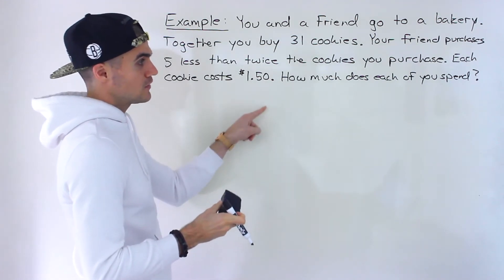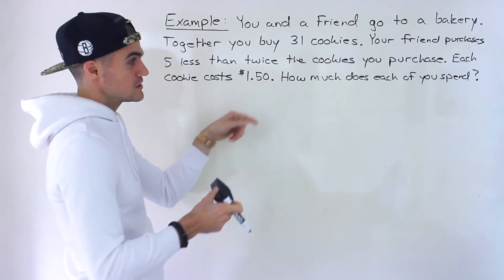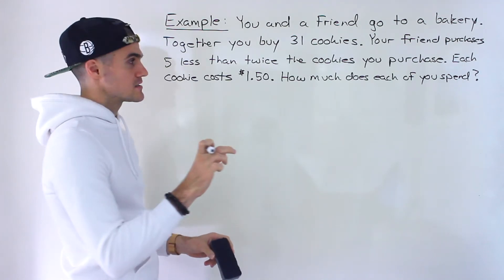And then once we know the amount for each of you, we can just multiply those amounts by $1.50 per cookie to get the total amount spent. So we first have to deal with the quantities, the amounts.